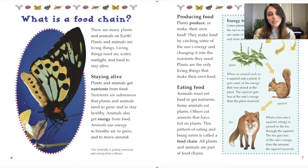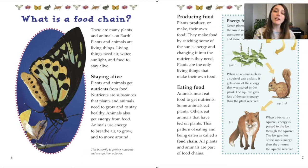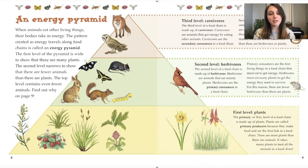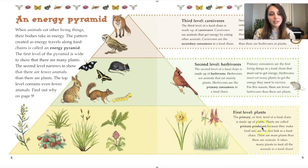Eating food: animals must eat food to get nutrients. Some animals eat plants; others eat animals that have fed on plants. This pattern of eating and being eaten is called a food chain. All plants and animals are a part of food chains. So my fennel and the swallowtail caterpillars are part of the food chain. Here's an energy pyramid that shows how energy is distributed in a food chain. At the bottom, the first level is plants — we call plants producers because they make their own food and get energy from the sun.